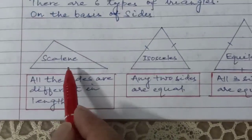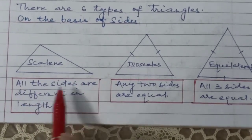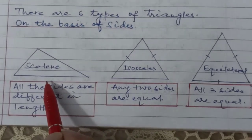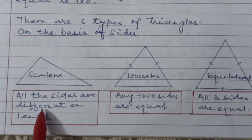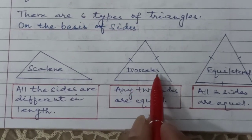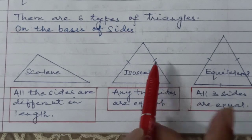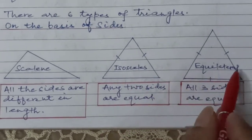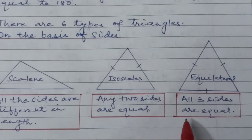In a Scalene triangle, all three sides are different in length — that is called a Scalene triangle. In an Isosceles triangle, any two sides are equal — that is called an Isosceles triangle. In an Equilateral triangle, all three sides are equal.